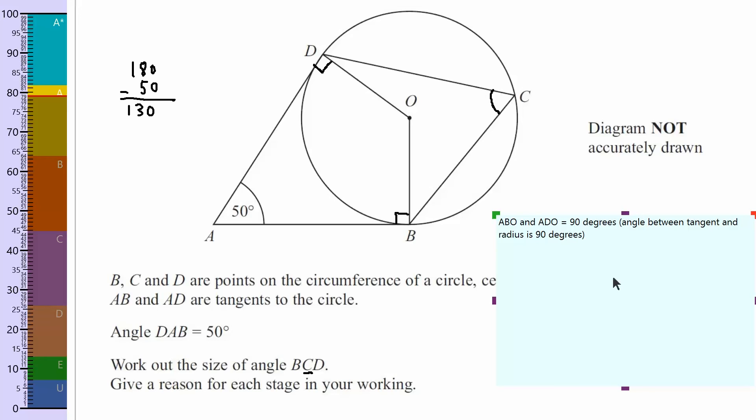So ABOD is quadrilateral. Actually I don't need to write that. I'll just write the angles. So BOD equals 130, and then just in brackets, angles in quadrilateral add to 360 degrees. So we've got the angle there. So if I mark on the angle so we can keep track, that's 130 there.